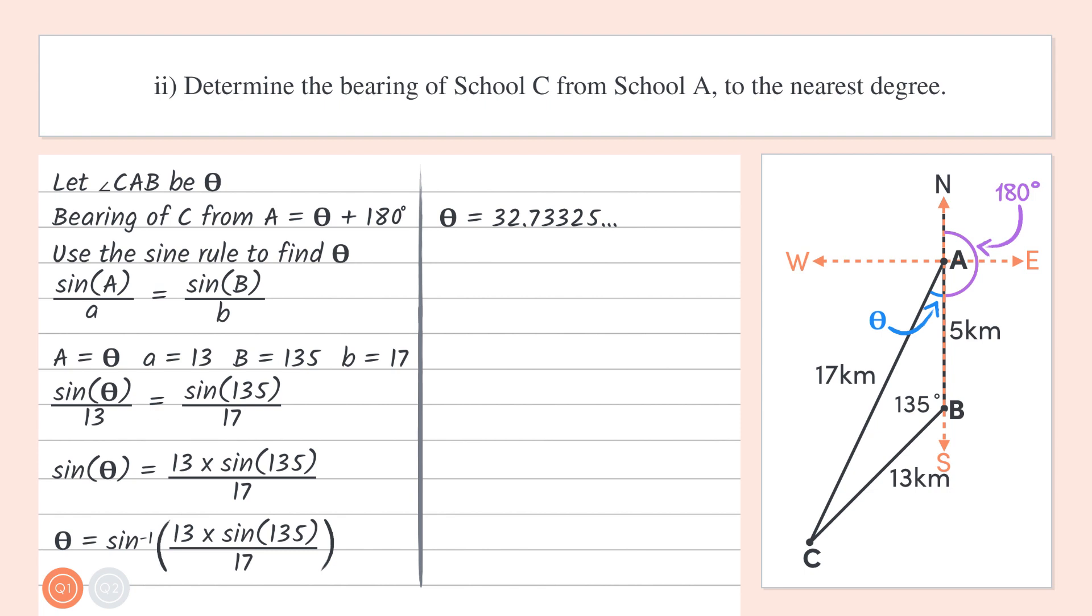Pressing that degrees, minutes, seconds button gives us theta is equal to 32 degrees, 43 minutes, and 59 seconds. Sweet. So now that we have theta, let's add 180 degrees to it to get the size of the initial angle we were after, which is 212 degrees, 43 minutes, and 59.7 seconds. Rounding this up to the nearest degree gives us 213 degrees.